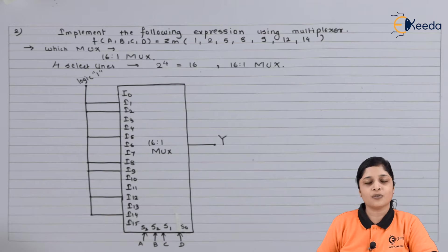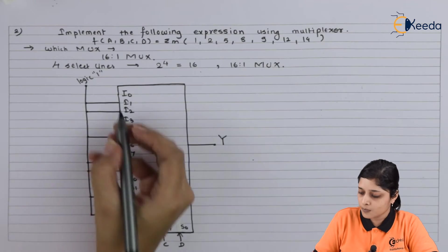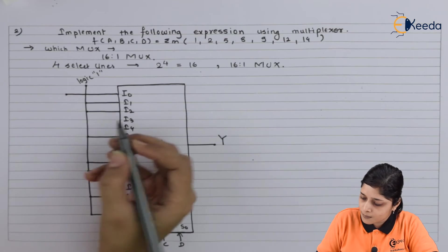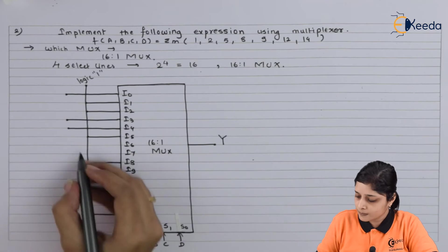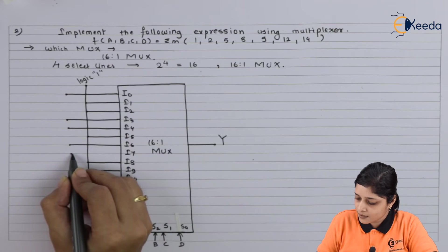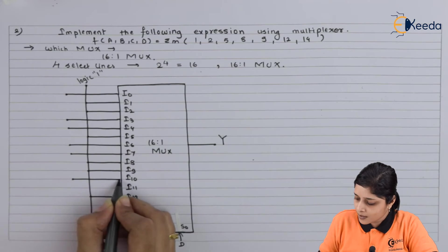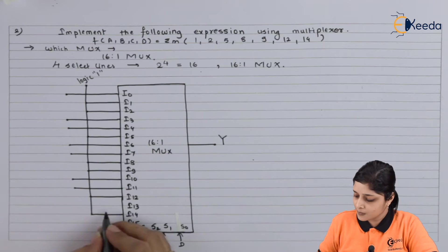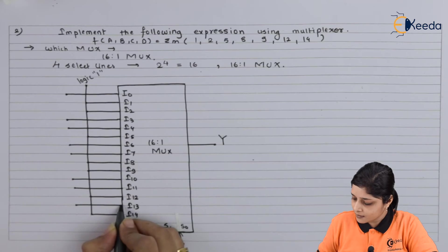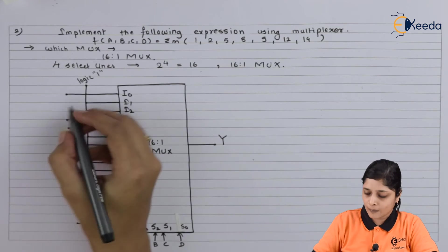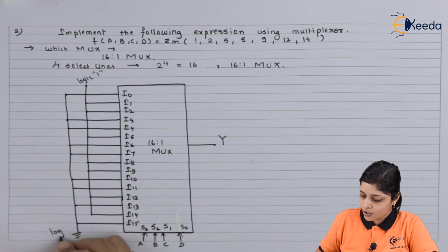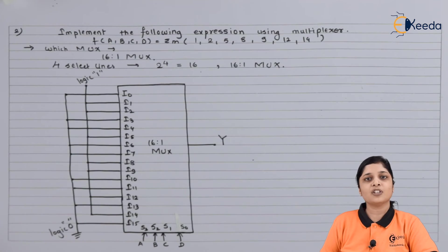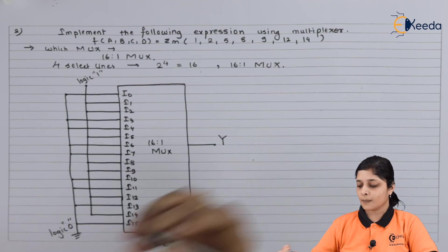The remaining inputs are connected to logic 0: I0, I3, I4, I6, I7, I10, I11, I13, and I15. All these inputs are connected to logic 0. By default, the enable terminal is 1 because it is in active condition.